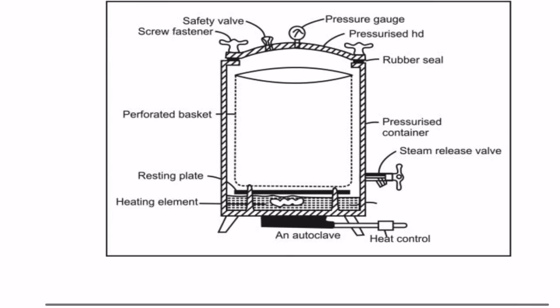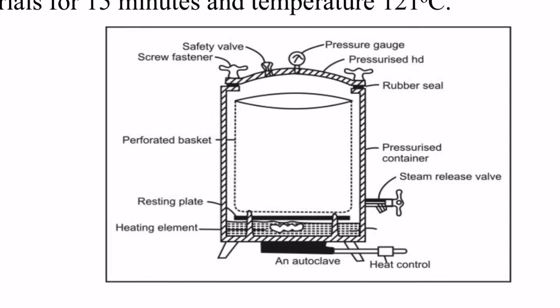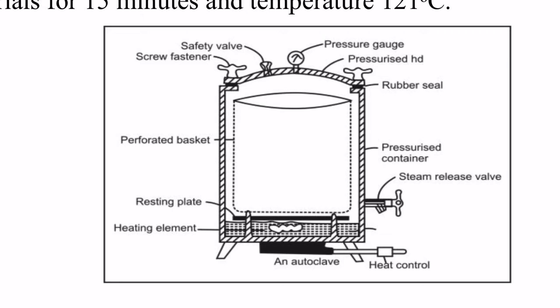This is a diagram of the autoclave. In the autoclave there are knobs — you can see the upper knobs which are named screw fasteners. There is also a safety valve, pressure gauge, pressurized hood, and rubber seal. The rubber seal attaches the container to the upper lid. This is the autoclave lid.